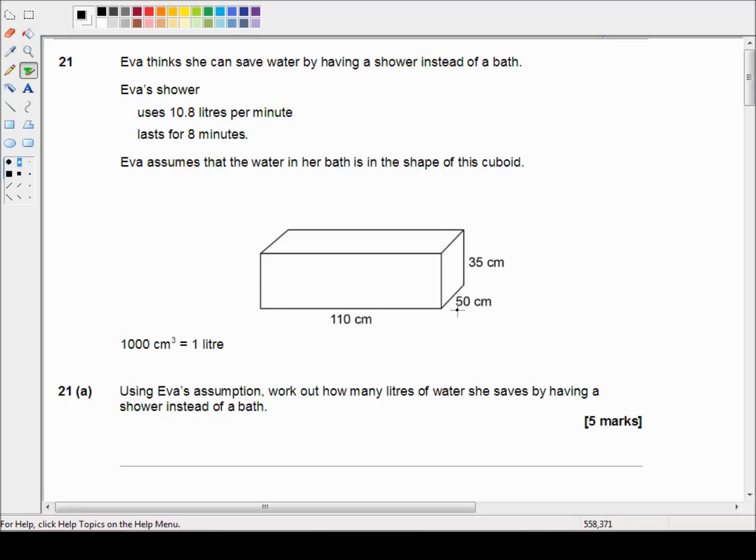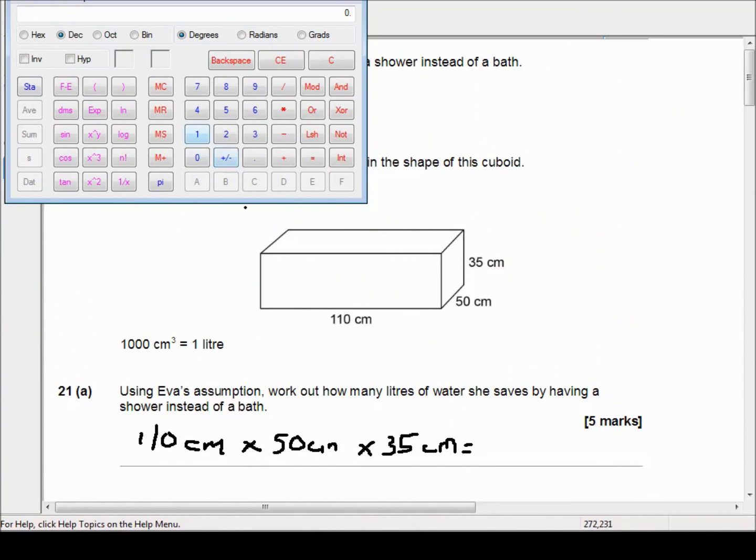The volume of water used for the bath is just simply multiplying the length by the width by the height. So that's 110 centimeters times 50 centimeters times 35 centimeters, for which we're going to need a calculator. I'm just going to type in 110 times 50 times 35.